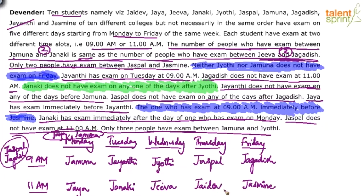Interesting question but not very complex. This is the final arrangement: Monday to Friday, 9am and 11am slots. The order is Jamuna, Jaya, Jayanti, Janaki, Jyoti, Jeeva, Jaspal, Jayadev, Jagdish and Jasmine.